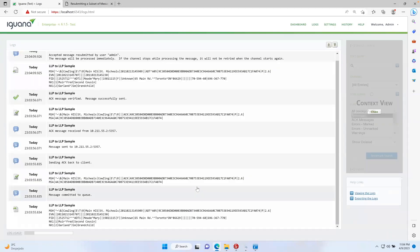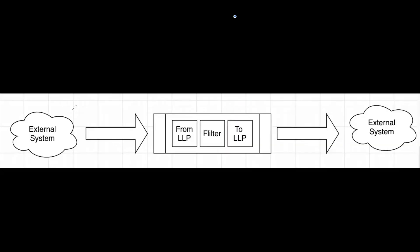Now this method is only feasible if you have under 10 messages. The issue with the resubmit option is if your Iguana instance is continuously sending messages over LLP and in between you have one message that failed to send, using the resubmit button over and over again can cause more strain on your Iguana instance. If you have around 40 or 50 messages to resubmit, you're adding to the load of your Iguana instance — essentially 50 times the load — eventually slowing down or affecting the performance of your Iguana instance.